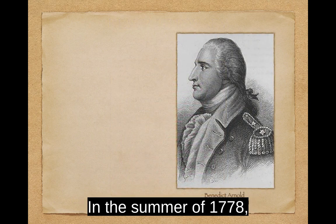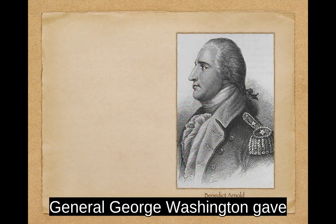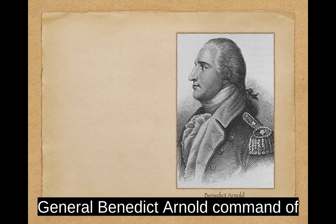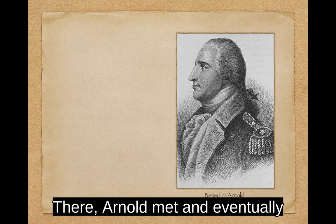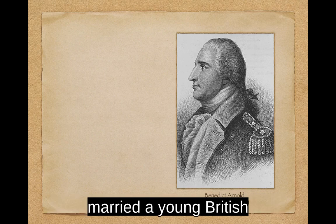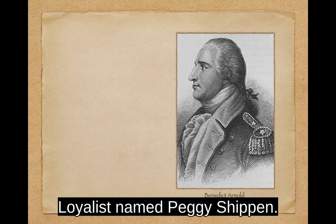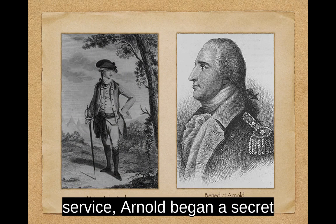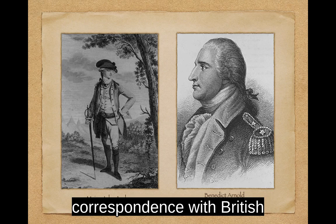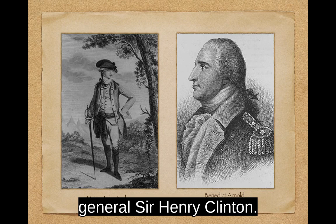In the summer of 1778, General George Washington gave General Benedict Arnold command of Philadelphia after the British evacuated. There, Arnold met and eventually married a young British loyalist named Peggy Shippen. Through her friend John Andre, the adjunct general in the British Army and chief of its intelligence service, Arnold began a secret correspondence with British General Sir Henry Clinton.